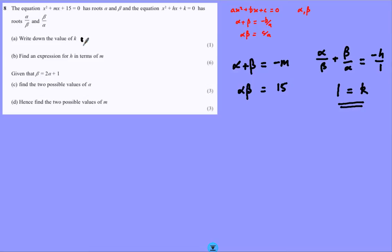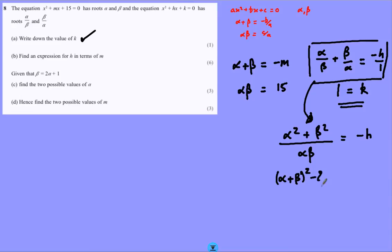Expression for h in terms of m - for that, what I'm going to do is go to this expression here, make it into a single fraction. Common denominator alpha beta, we get alpha squared plus beta squared over alpha beta, which equals minus h. We've got an identity, very popular in these questions, to deal with this expression: alpha plus beta squared minus 2 alpha beta. And the reason we do it is that it now has the alpha plus beta and 2 alpha beta that I can substitute in. So what have I got? Minus m squared minus 2 lots of 15, over 15, equals minus h, and that's going to give me h equals 30 minus m squared over 15.